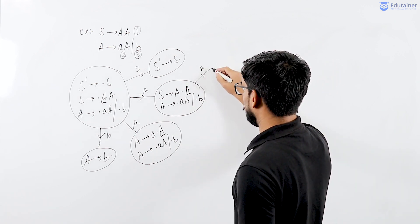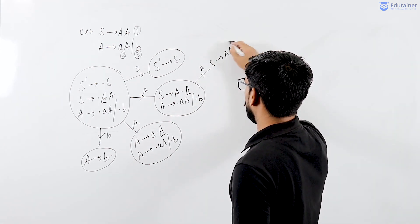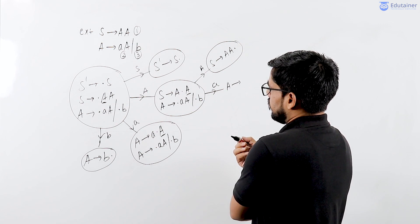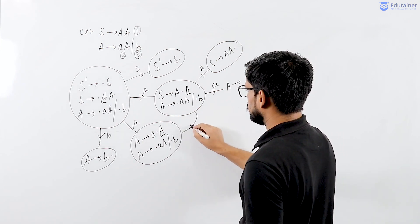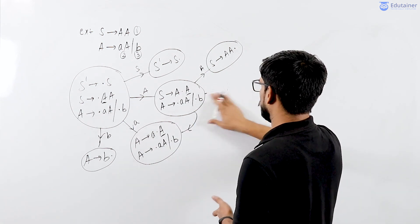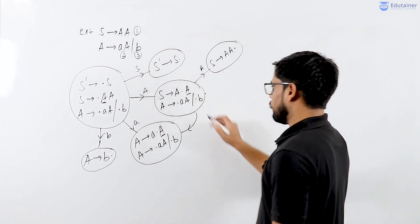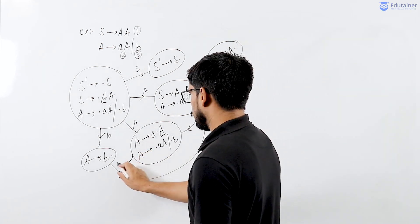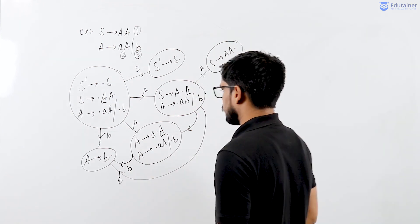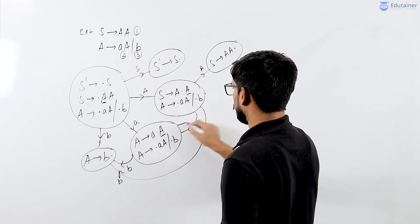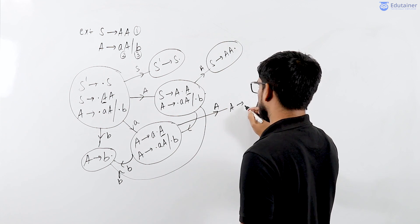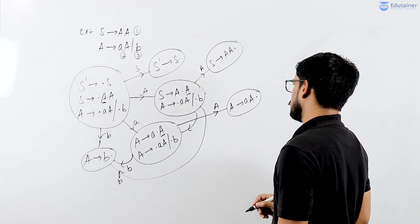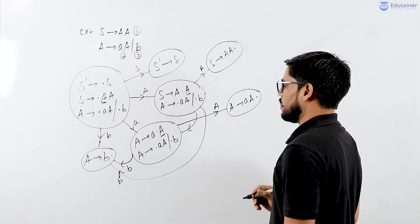Let us take a move for A: A derives AA dot, and this is the final item. For small a, it will go back to the same state, so no need to construct an external state. For small b it will go to that state. Here also for small b it will go to that state, and for capital A it will take a goto move and finally reach a dot at the rightmost side of RHS, so it will have a final item.